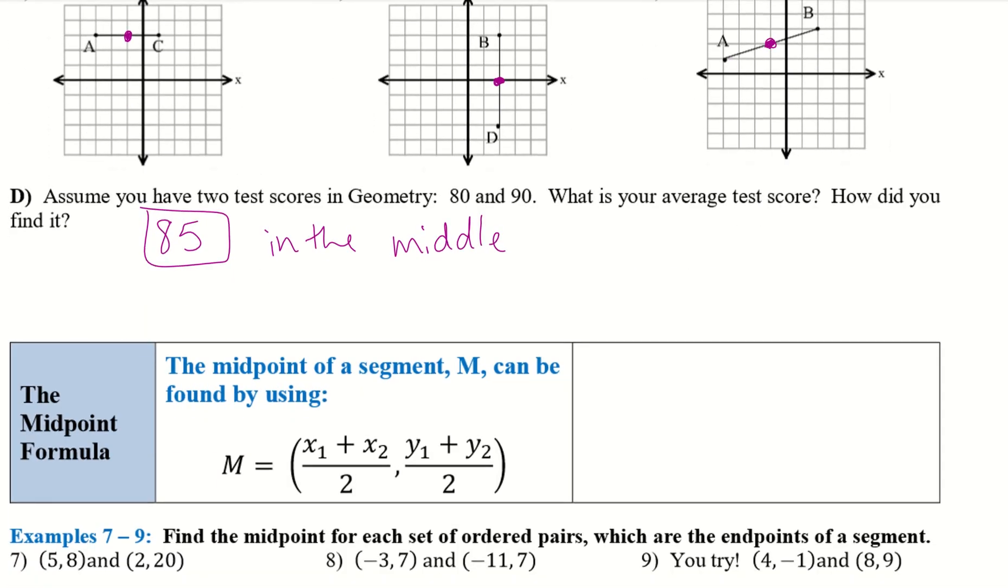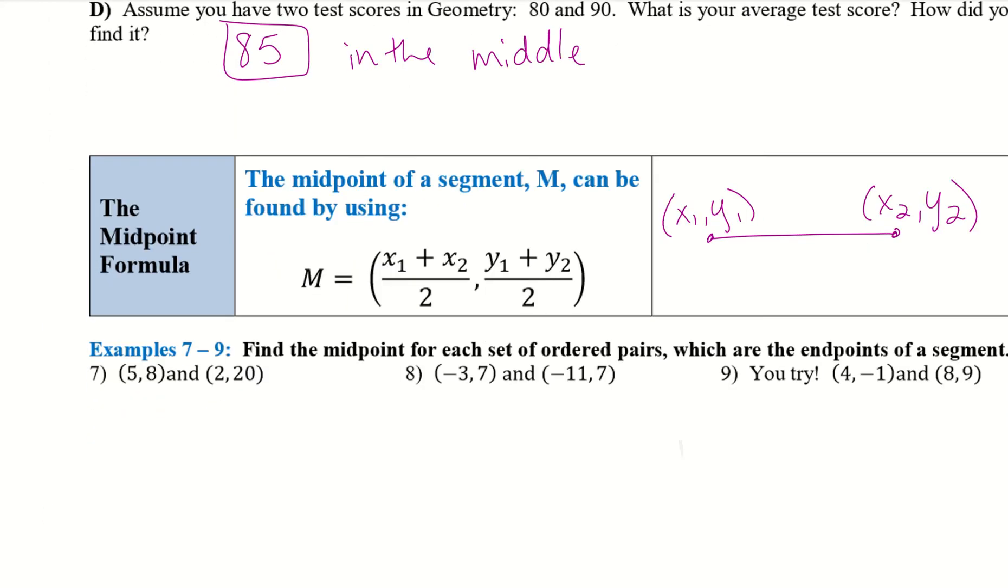So the midpoint formula, the midpoint of a segment M can be found by using this formula. So if we have a line here, we're going to have x1 and y1 and then x2 and y2. So that's what those points mean. It's always xy, but each point you're going to have your first point that has x1 and y1 and then your second point that has x2 and y2. So let's go ahead and give that a shot.